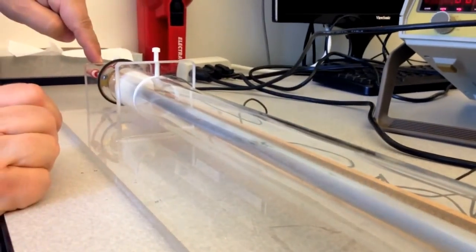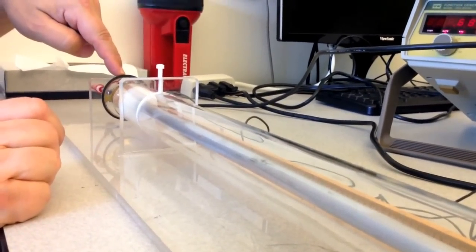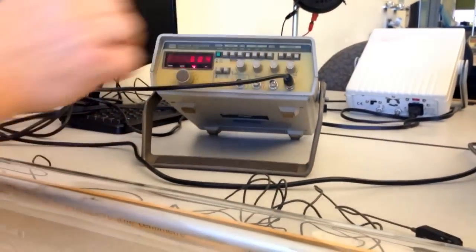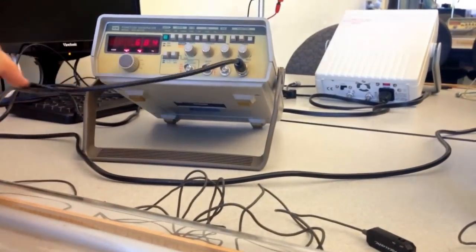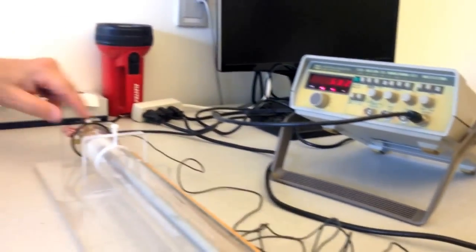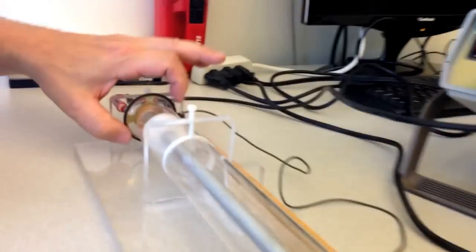This signal generator now is powering the speaker. And we can change the amplitude or the loudness of the speaker by turning this amplitude knob directly above the output. So the output is connected to this round circular speaker here.